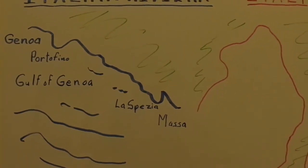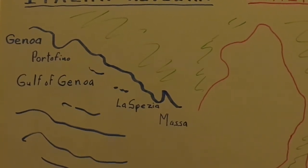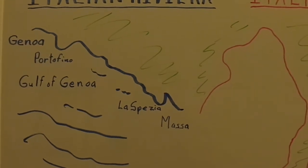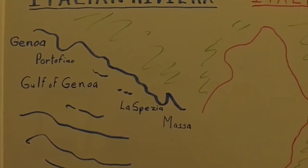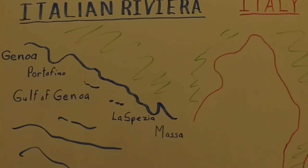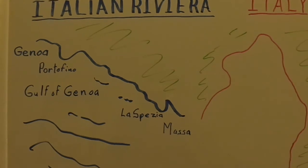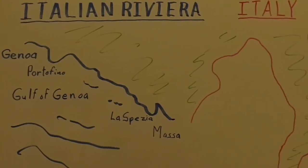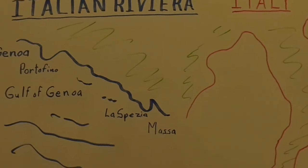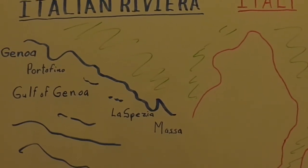Equivalent projections are very desirable, because with them, misleading impressions of size are avoided. Equivalence is difficult to achieve on small scale maps, because shapes must be sacrificed to maintain proper aerial relationships. Most equivalent world maps, which are small scale maps, therefore display disfigured shapes.